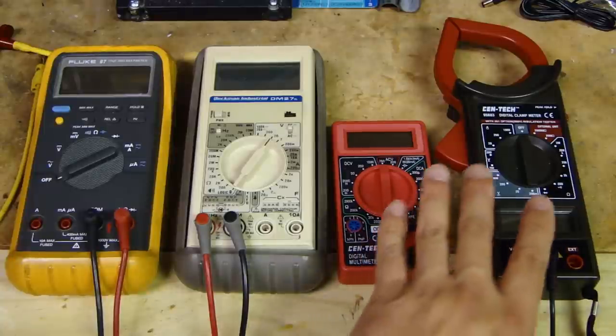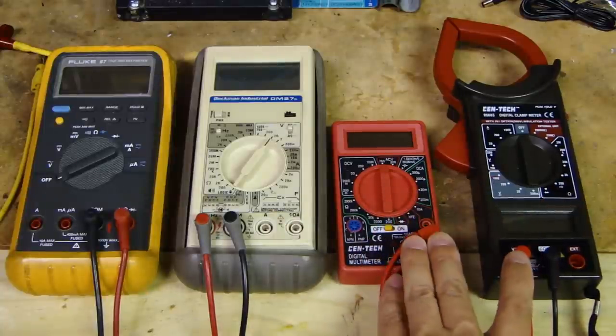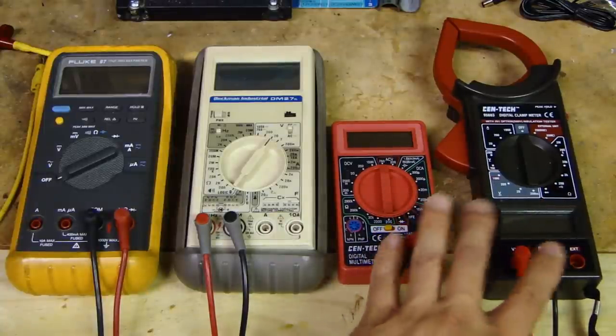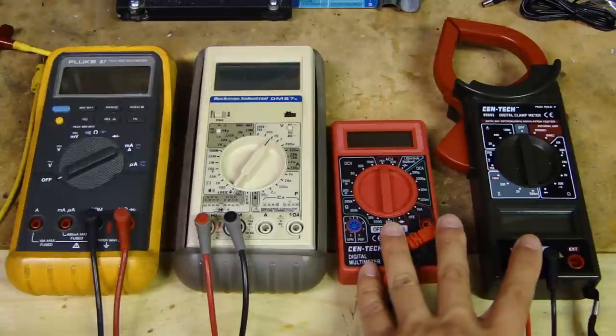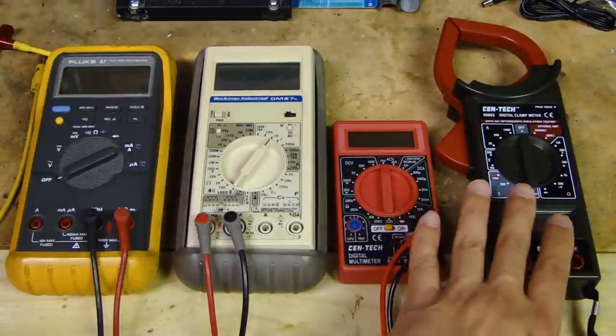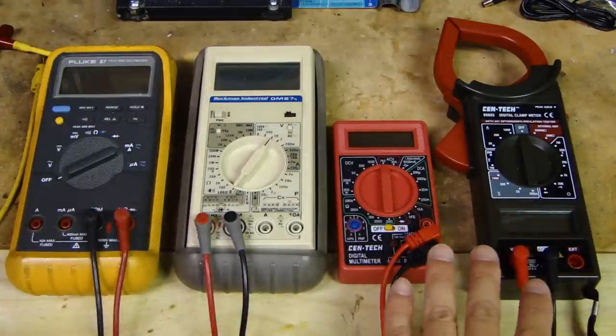These two on the right are your very economical Harbor Freight multimeter. They run from $10 to $20. But again, the basic function between all these are the same.